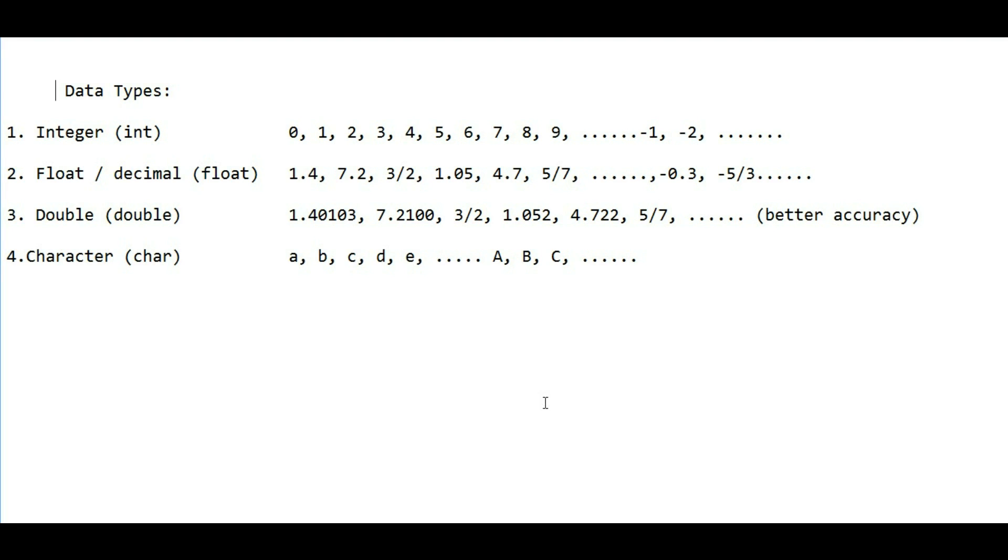Hey guys, welcome to the C tutorial. Today I'm going to introduce data types, the data you will write in your C program. The first kind is integer type. Integer type is actually a number without any fractional or decimal part - like 0, 1, 2, 3, whole numbers. It can be negative, it can be